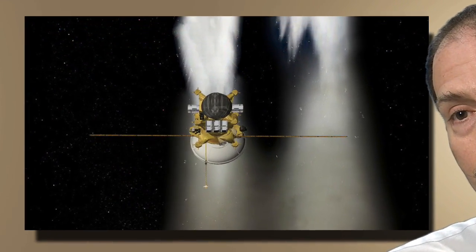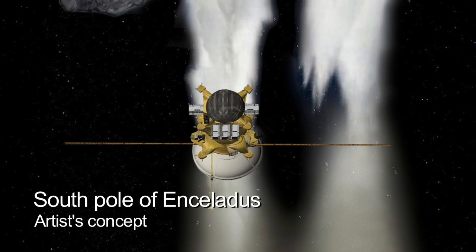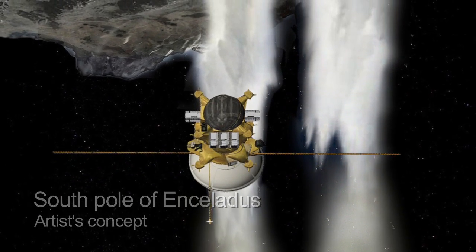These geysers have water ice and we strongly suspect that there's liquid water in the region that these geysers are coming from. We know there are organic molecules there because they've been measured by Cassini.